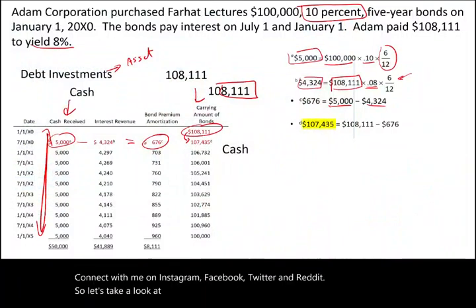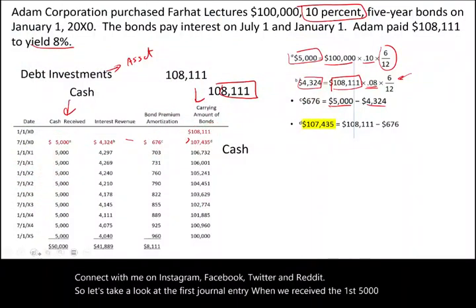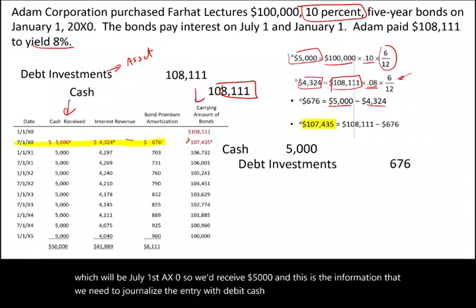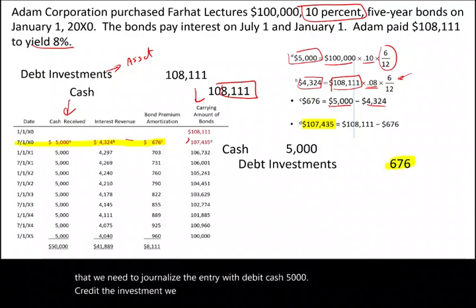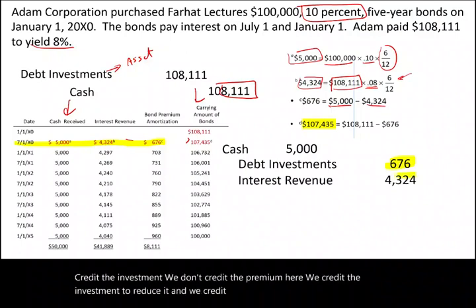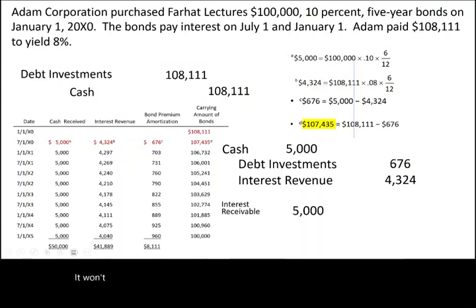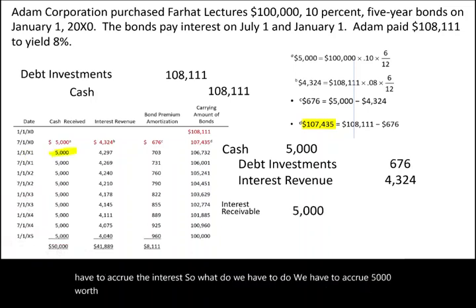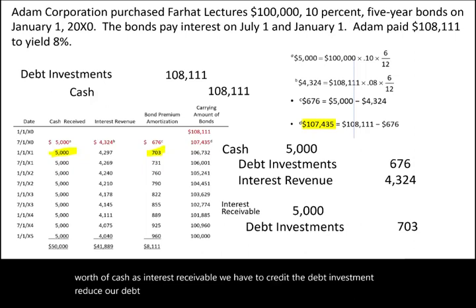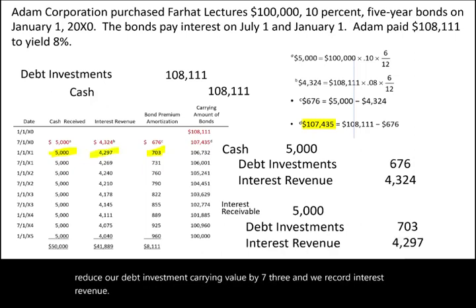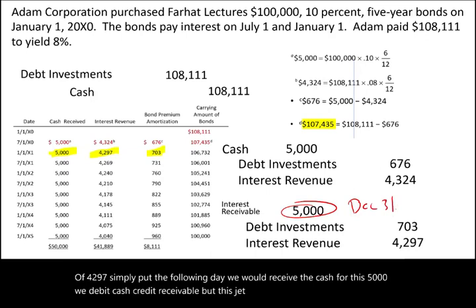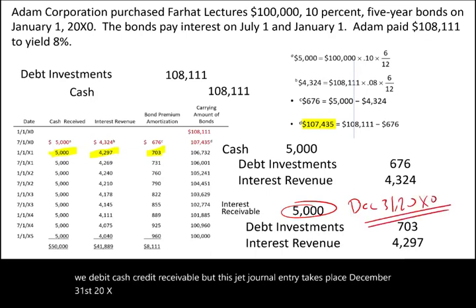When we receive the first $5,000 on July 1st, 20X0, we debit cash $5,000, credit the debt investment to reduce its carrying value, and credit interest revenue $4,324. On December 31st — one day before we receive the next payment — we accrue the interest: debit interest receivable $5,000, credit the debt investment for $703 to reduce carrying value, and credit interest revenue $4,297. The following day we receive the cash and debit cash, credit interest receivable.